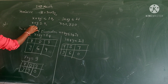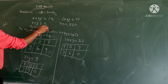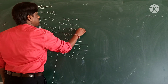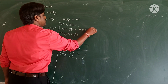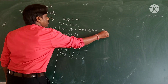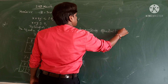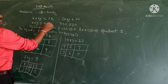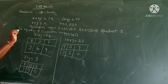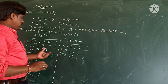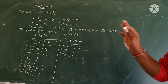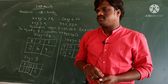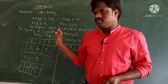Now, always remember: the solution region of x ≥ 0 and y ≥ 0 represents the first quadrant. There is no need to draw the diagram for this - just write that x ≥ 0 and y ≥ 0 represents the first quadrant solution. Now plot all the points on the graph, draw the lines, and find the corner points. Substitute each corner point into z = 3x + 5y and check for which value you get the maximum.